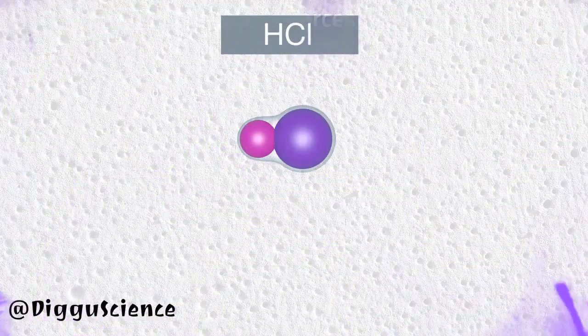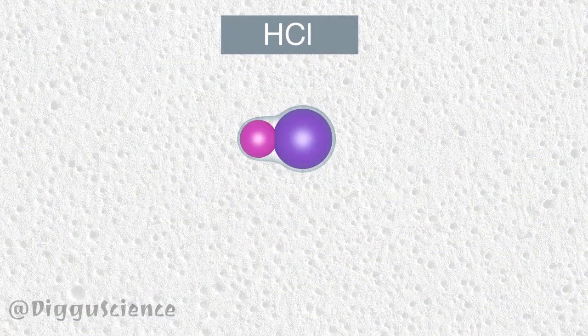As an illustration, here is a hydrochloric acid molecule. The HCl molecule is a polar molecule because the two constituent atoms have a large difference in electronegativity. Based on electronegativity analysis, the H atom has positive polarity and the Cl atom has negative polarity.